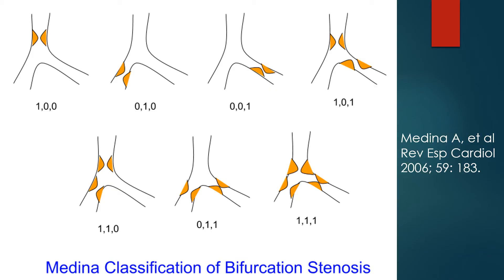If only the proximal segment of the main branch has a significant lesion, it becomes Medina 1,0,0. If the distal branch of the main branch alone is involved, it becomes 0,1,0. Sole involvement of the side branch is designated 0,0,1, and involvement of all three is designated 1,1,1, and so on.